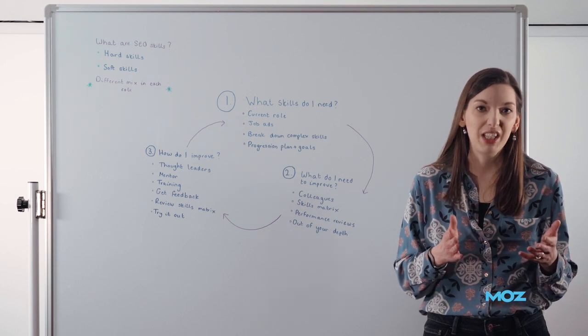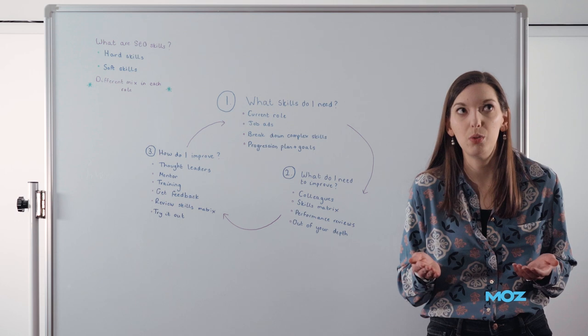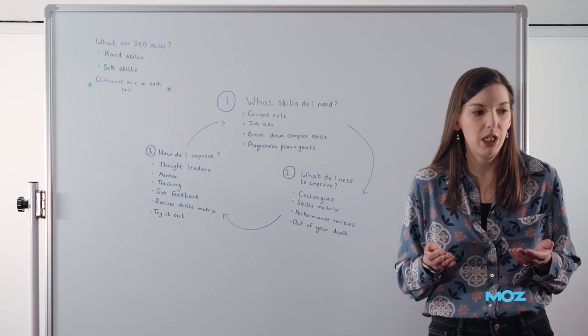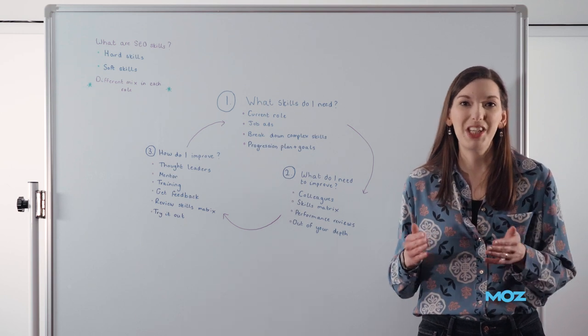So for instance, you might have done a bit of a technical audit or you might have had some meetings. Of course, you've had meetings. We all spend our lives in meetings. But jot them down and start to break them down into the skill sets that you need to be good at each of those activities.